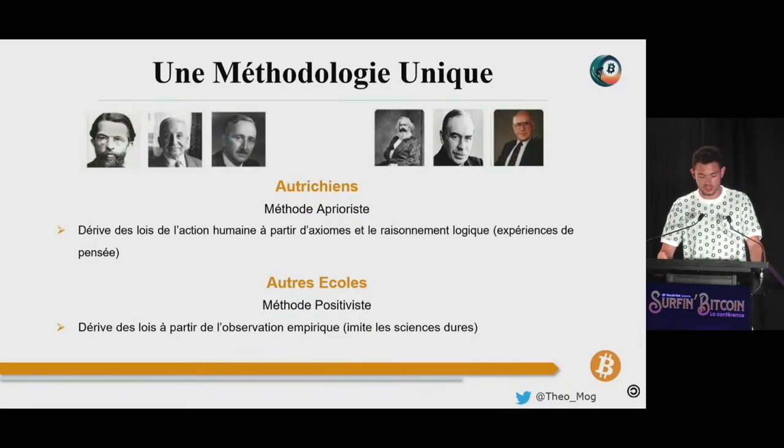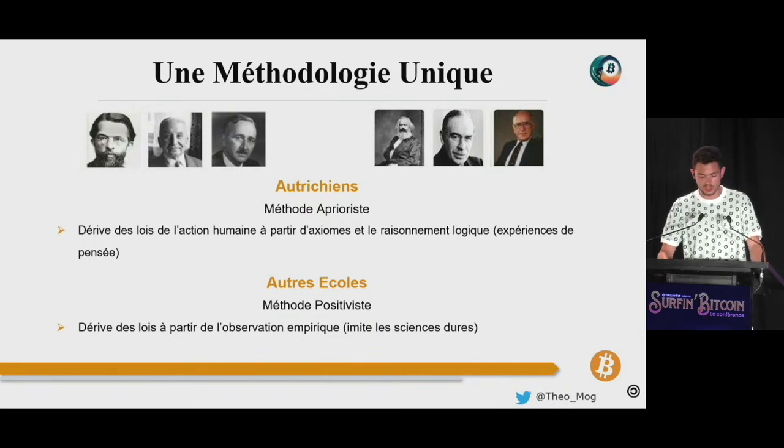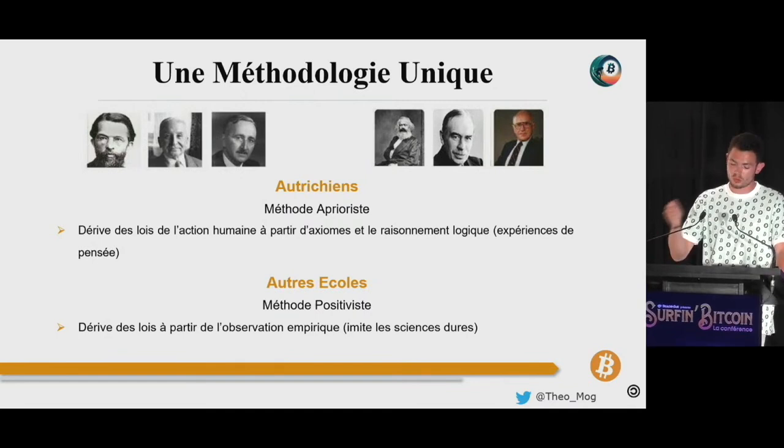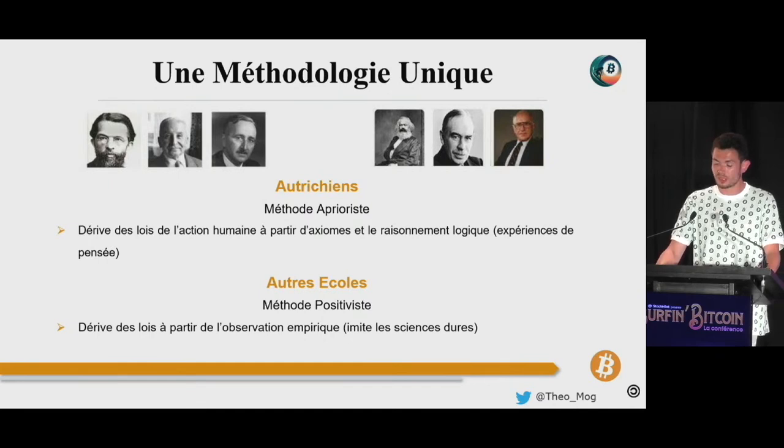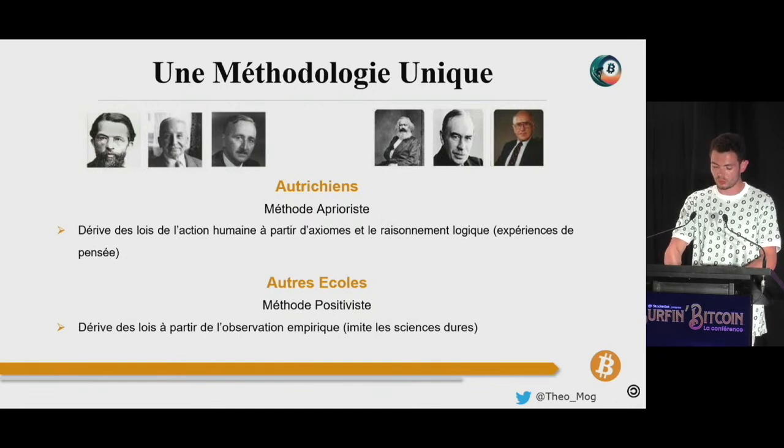Au contraire, les économistes autrichiens considèrent qu'il faut d'abord se doter d'une théorie des phénomènes pour ensuite étudier les données historiques. Ils s'appuient sur une méthodologie qu'on dit a prioriste, ou parfois axiomatico-déductive. C'est une méthodologie qu'on utilise aussi en mathématiques, en philosophie, et qui consiste à partir d'axiomes aussi évidents que possible pour ensuite utiliser les règles de la logique et dériver des énoncés supérieurs.